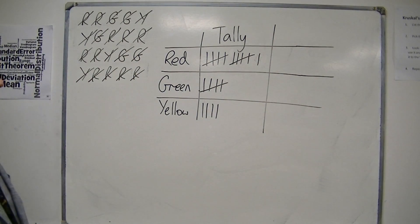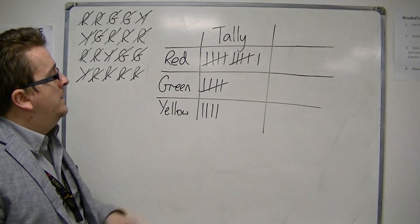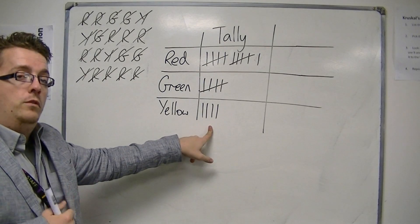And so what we have here is that two bunches of five and an extra one, a bunch of five, and then I've got four for yellow.